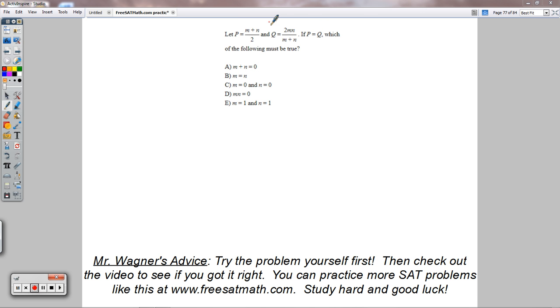If P equals Q, that means this must equal that. So let's write that out first. M plus N divided by 2 is supposed to equal 2MN divided by M plus N.